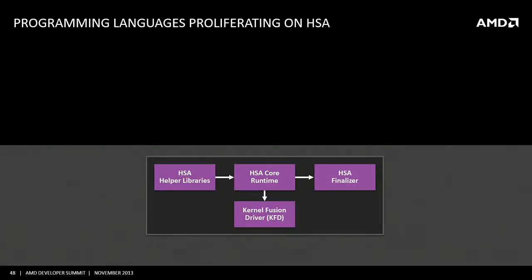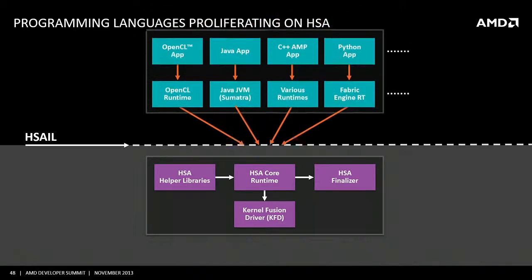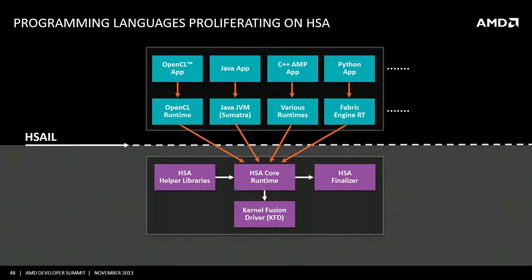The software stack enabling that development starts with the HSA System Stack: a core runtime, a finalizer, a kernel driver, and helper libraries. The interface layer is HSAIL — the HSA Intermediate Layer — the object code format and target for parallel acceleration. On top of that, we support a number of programming models: to begin with, OpenCL, Java, C++ AMP, and Python, with more languages to come.